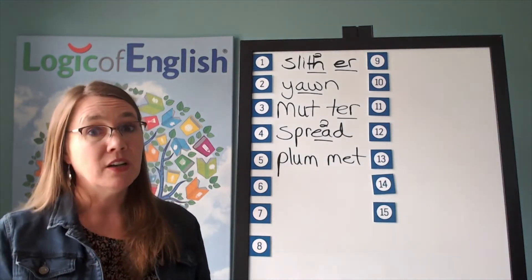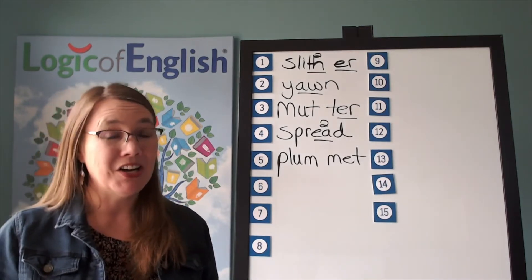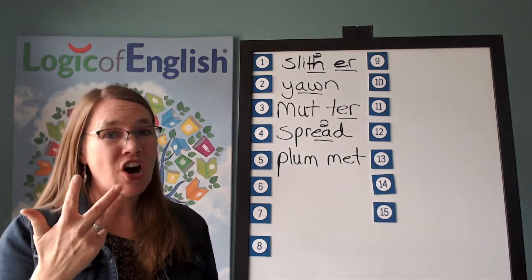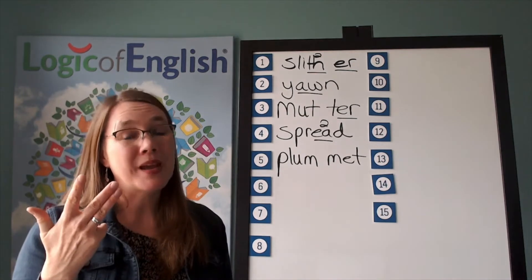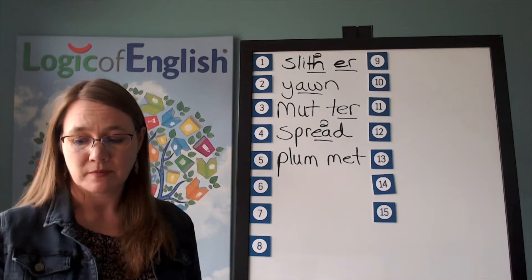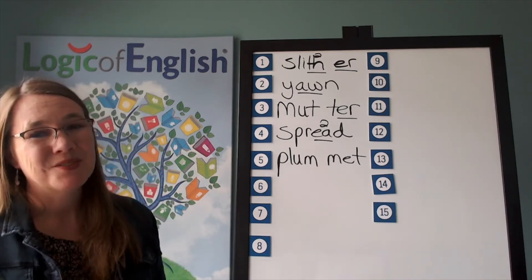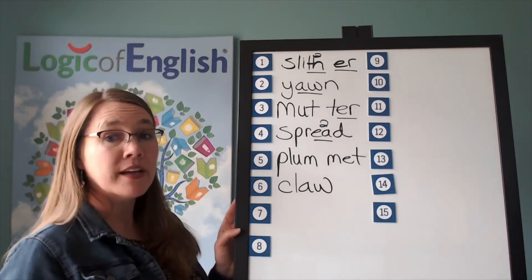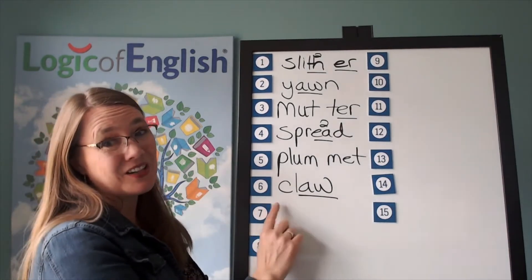The next word is claw. The claw on the cat is very long. Claw. Go ahead and say claw. Let's sound it out: c-l-aw. Which kind of aw? That's right — aw that you may use at the end of English words. Go ahead and write claw. Help me to write it: c-l-aw. We'll underline the aw. Let's read it: c-l-aw — claw.